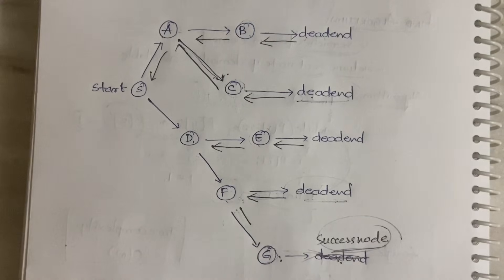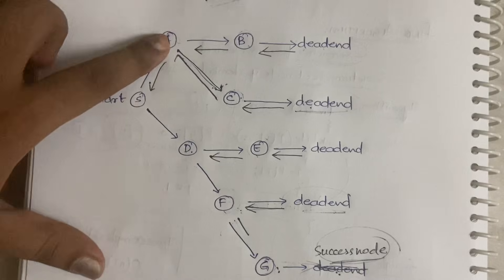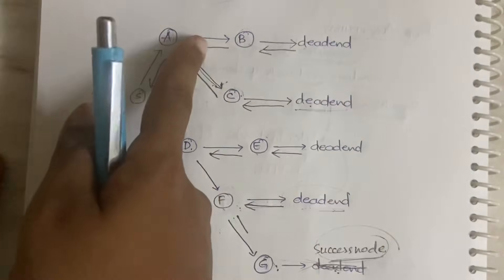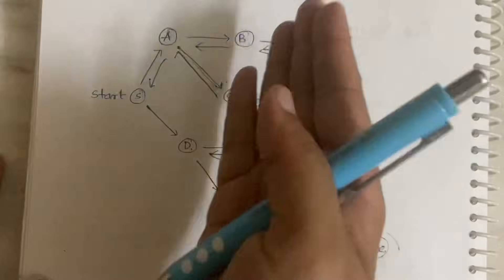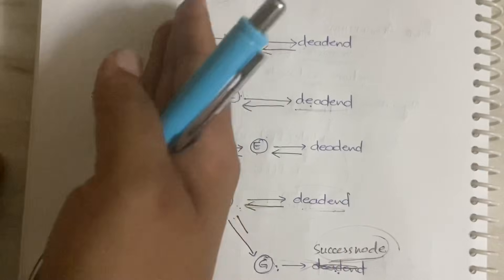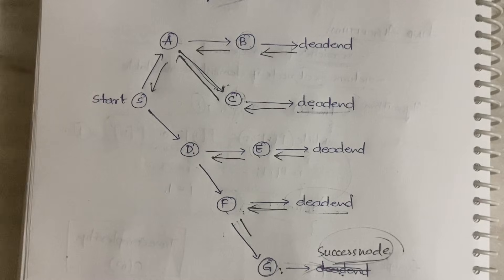To summarize: from S you go to A, A to B, B to dead end — since it is not your destination you come back. You keep coming back until you find a sub-node. If there is no sub-node, you go all the way back to the starting node. This is how backtracking works — until you get your destination, you keep trying.